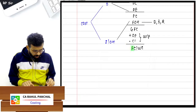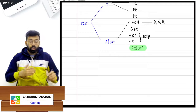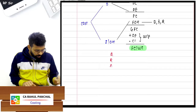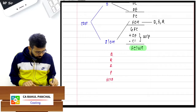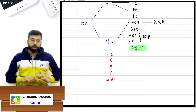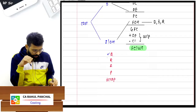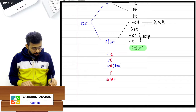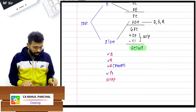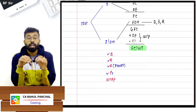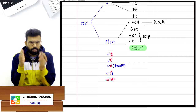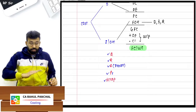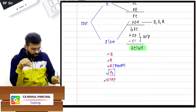After that, once the factory cost is done inside the factory, there are other costs also which are incurred. There is one shortcut: QRAP minus scrap. Q means quality control, R means research and development, A means administration — but only that administration which is connected with production activity. Then there is primary packing. If it is secondary packing, it will form a part of selling and distribution overhead.